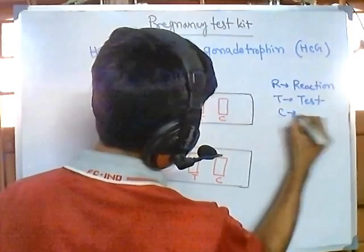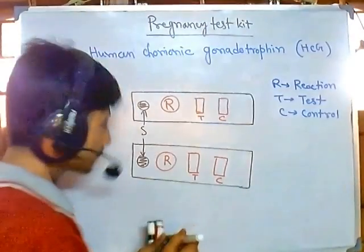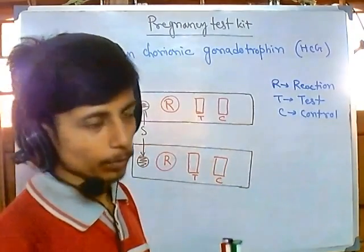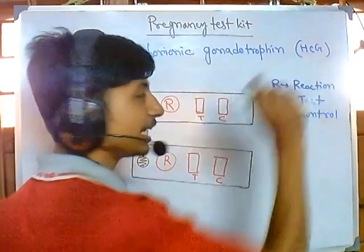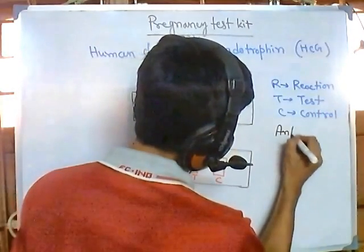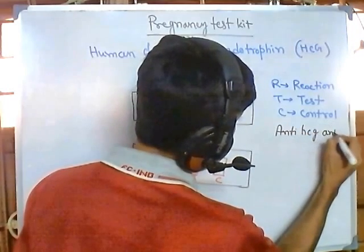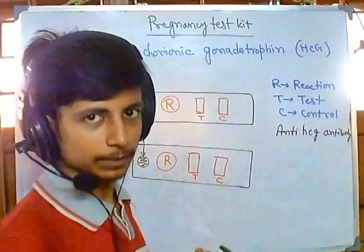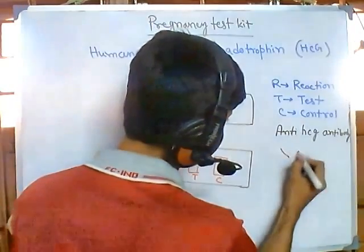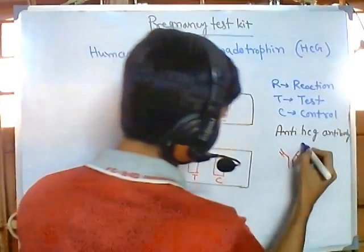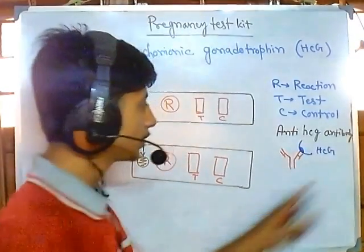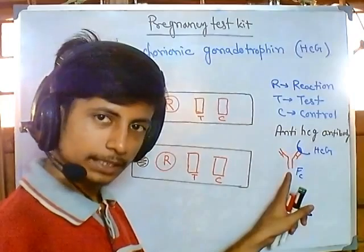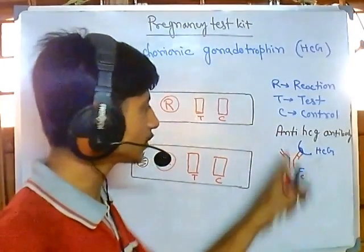In the R region, we add antibodies to detect the presence of the hormone. These are antibodies produced against HCG in mouse, termed anti-HCG antibodies. The anti-HCG antibody can bind with HCG — human chorionic gonadotrophin — at a special region of HCG. The FC region of this antibody is generated in mouse. Importantly, the antibodies in the R region have enzymes attached to them.